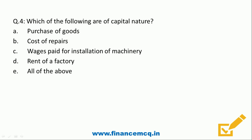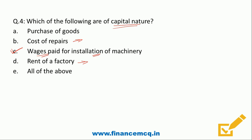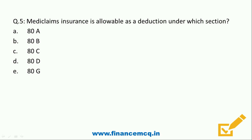Question four: Which of the following is capital in nature? Options: a) Purchase of goods, b) Cost of repairs, c) Wages paid for installation of machinery, d) Rent of the factory, e) All of the above. The correct answer is option C. Wages paid for installation of machinery are added to the cost of the asset. Purchase of goods, cost of repairs, and rent of factory are all revenue in nature.